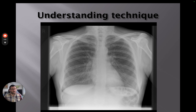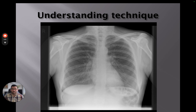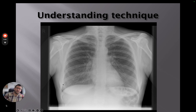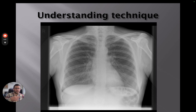If we had regular lung markings and then a distinct stop with just black beyond — we've got air where it shouldn't be. Air inside the thoracic cage that shouldn't be there is a pneumothorax. If we look down at the costophrenic angle and instead of a nice sulcus we've got white causing a meniscus or a line of fluid, we've got a pleural effusion — because fluid appears white as it doesn't let X-rays pass through, and it's where it shouldn't be. Putting all of this together, we can understand what's in front of us.